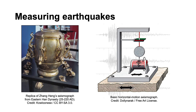The first known seismograph, or instrument for detecting and measuring earthquakes, was designed around the year 132 AD by Zhang Heng, who was chief astronomer for the later Han Dynasty in China. His seismometer was a large bronze jar, six feet across, with eight dragon figures spaced around the outside. Below each dragon was a bronze toad looking up with its mouth wide open. Each dragon had a ball in its mouth, and when an Earth tremor occurred, it would trigger a mechanism inside the jar, and the ball would drop with a loud clang into the gaping mouth of the toad below. By recovering the ball, the direction in which the earthquake had occurred could be worked out.